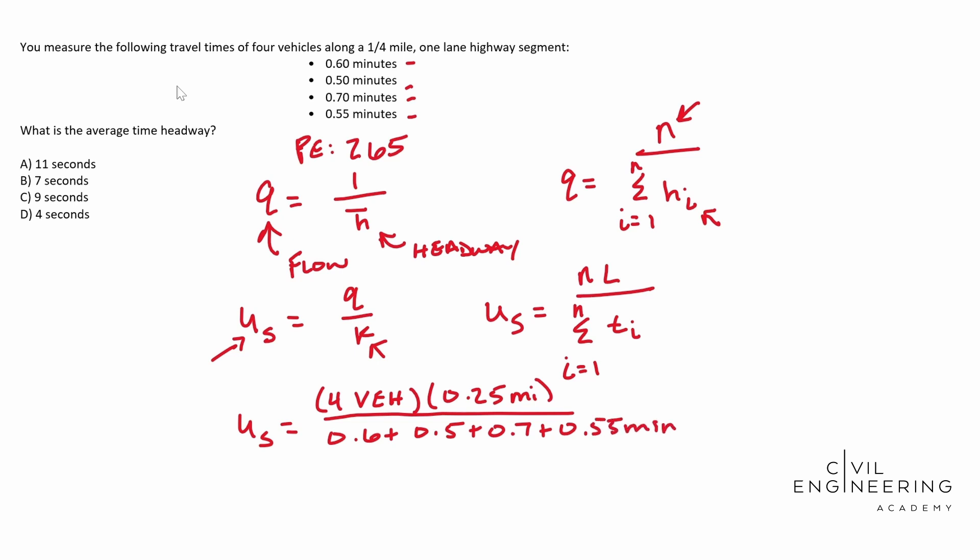So this guy is 0.6 plus 0.5 plus 0.7 plus 0.55. And for shorthand, I'm just going to write minutes because I understand they're all minutes under there. So whenever you simplify this guy out, you should end up with 0.426 miles per minute.